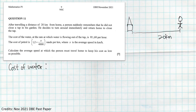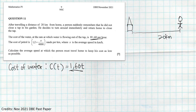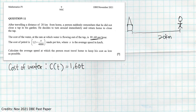We can express the cost of water as an equation. The cost of water C in terms of time t will be 1.60 times t, because the cost is R1.60 per hour. So after one hour, t = 1 and the cost is R1.60; after two hours we substitute t = 2 and double it. Hence our equation is C(t) = 1.60t.